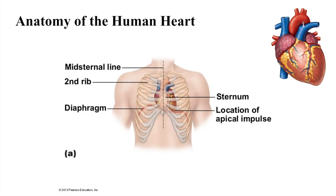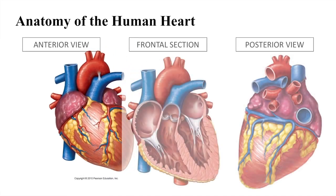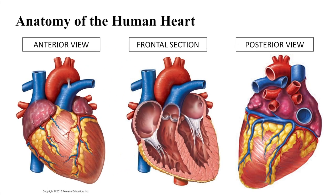The heart is a cone-shaped organ approximately the size of a fist. It is flanked laterally by the lungs, posteriorly by the vertebral column, and anteriorly by the sternum. Its more pointed apex extends slightly to the left and rests on the diaphragm. Figures in your book show three views of the heart: anterior and posterior views and a frontal section.